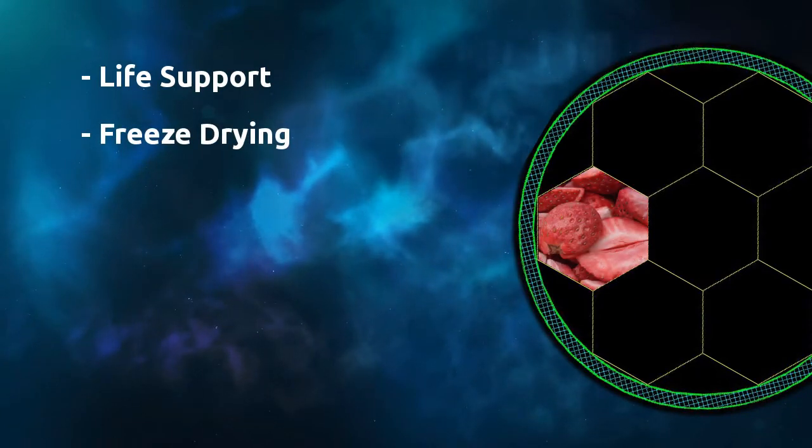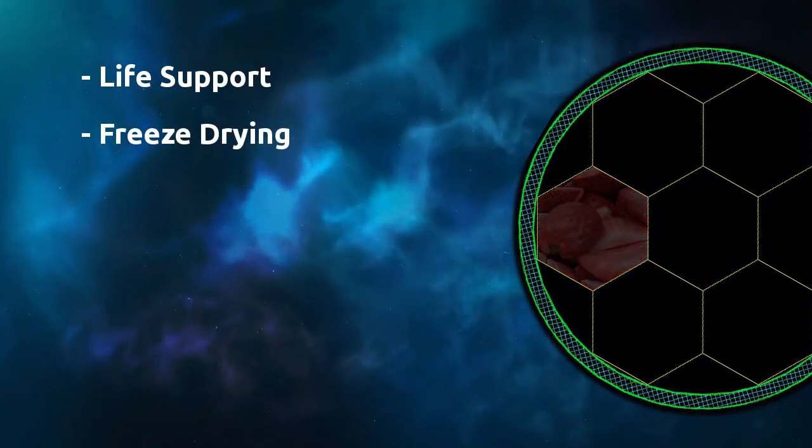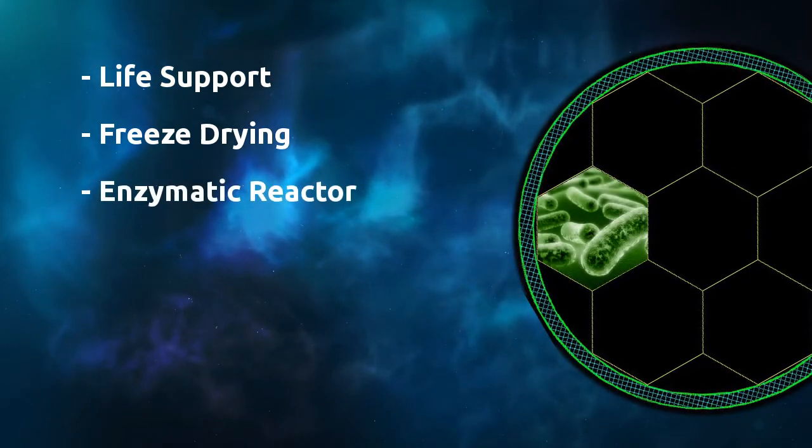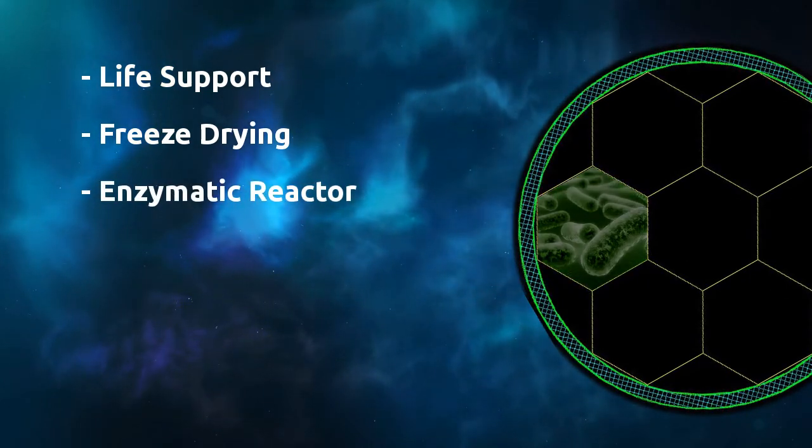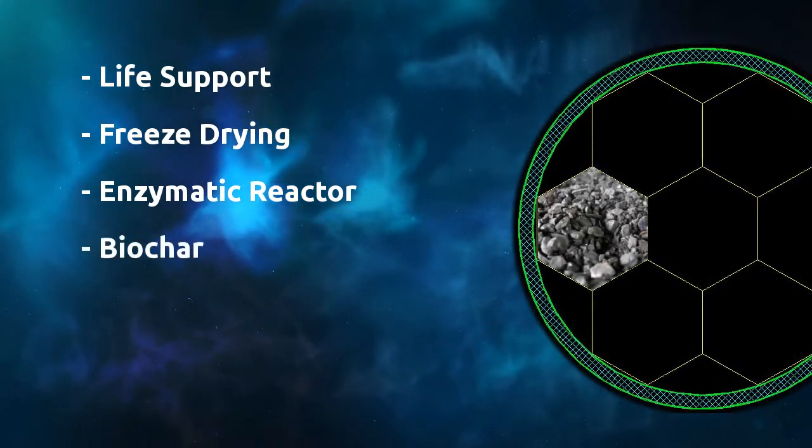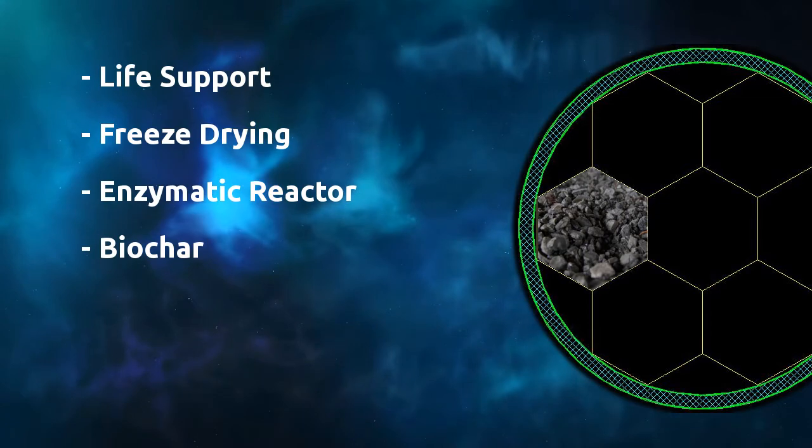This hexagonal system, in addition to the freeze dryers, is designed to incorporate additional modules. An enzymatic reactor to remove and reuse nutrients from the non-edible plant mass, and a biochar reactor for leftover solids, creating activated carbon for use in various spacecraft systems.